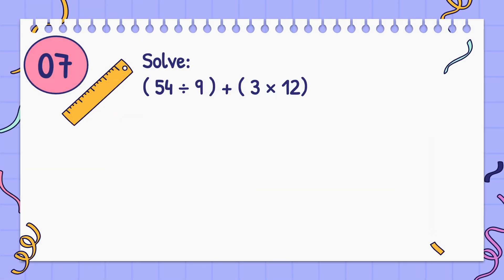Solve: 54 divided by 9, plus 3 times 12. Answer: 42.